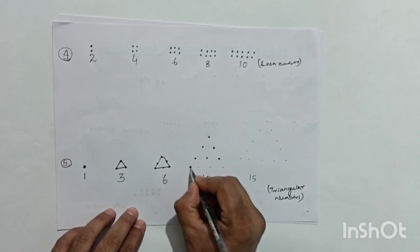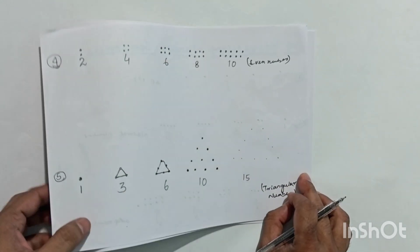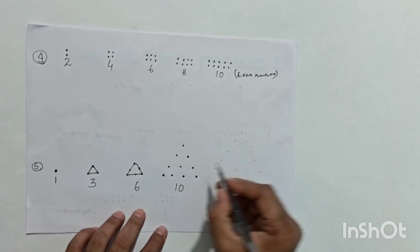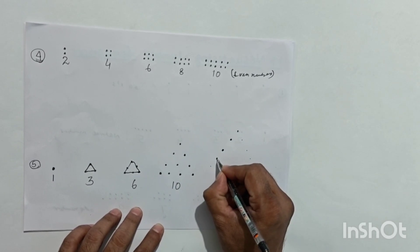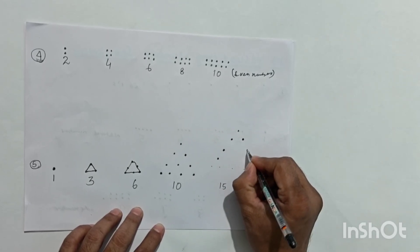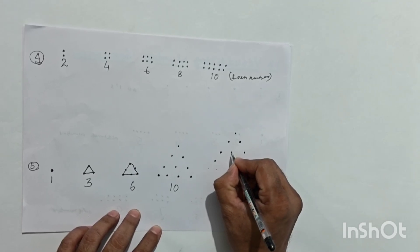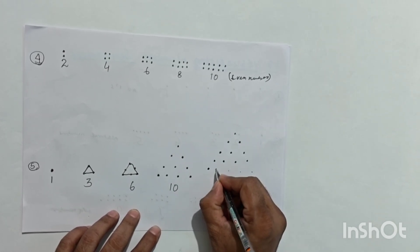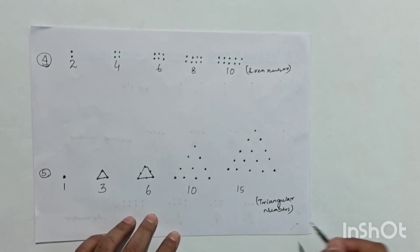For 15, we copy the previous arrangement and add one more row: 1, 2, 3, 4, 5, 6, 7, 8, 9, 10, then add five more to get 15. The result looks like an equilateral triangle, which is why these numbers are called triangular numbers.